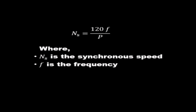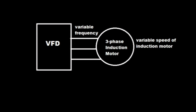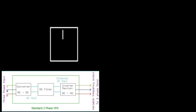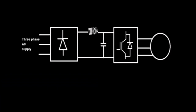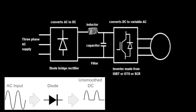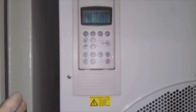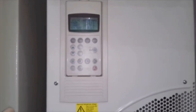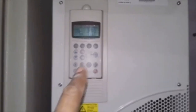When we apply a three-phase supply to the converting circuit, it converts into DC — but not pure DC; it is a pulsating DC. In the converting section, diodes are commonly used to convert AC into DC. The three-phase supply lines R, Y, B are connected to the converting section, and it converts them into DC.